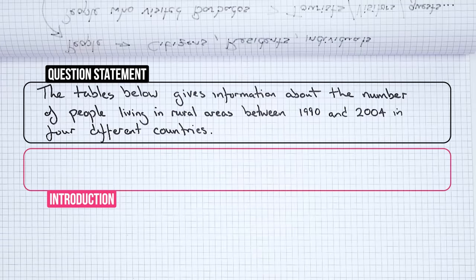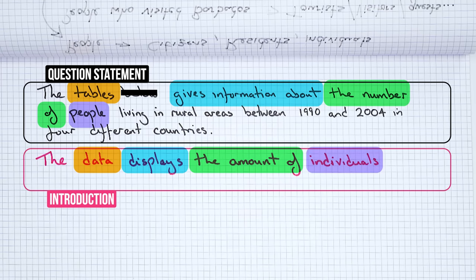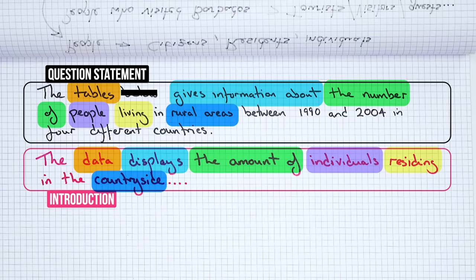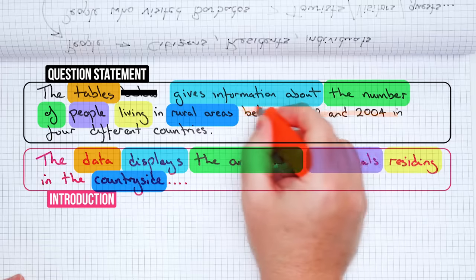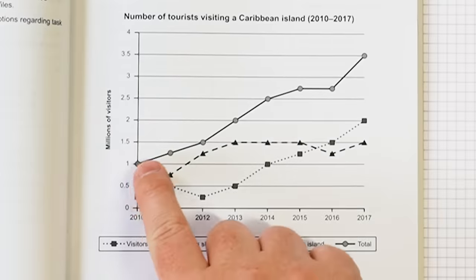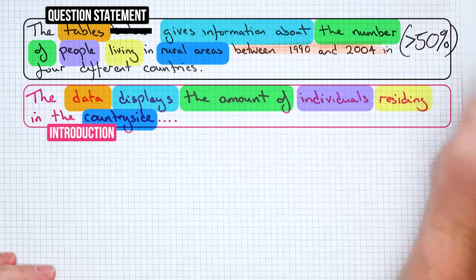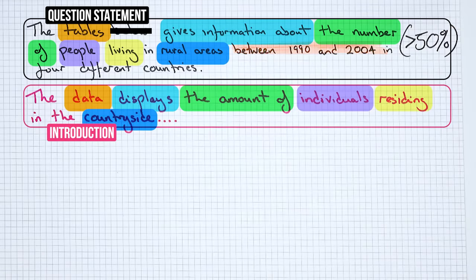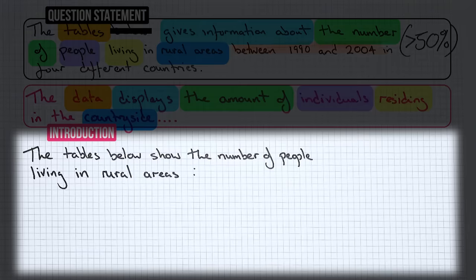So let's change this one. So 'the data' — we can delete 'below' — 'displays the amount of individuals residing in rural areas / countryside.' And then there will often be something like a time reference. These come up again and again, because you will often be shown change over time. A line graph, for example — the purpose of a line graph is to show changes over time. These actually come up in more than 50% of questions.